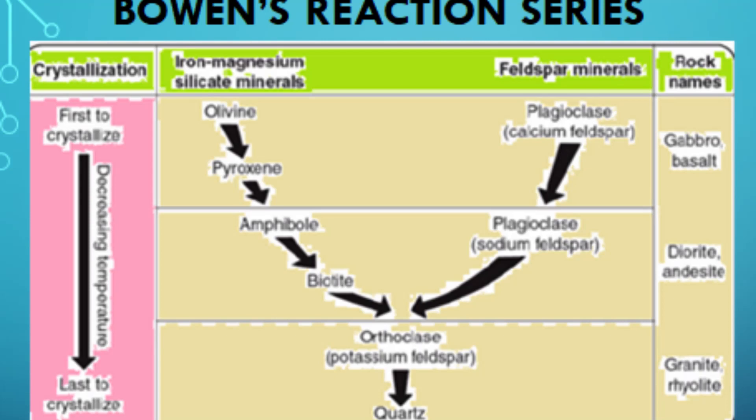The fifth principle is that the cooling rate affects mineral composition. The rate at which magma cools can affect the mineral composition of the resulting igneous rock. If magma cools quickly, only the first minerals to crystallize will have time to form, resulting in a rock rich in olivine and pyroxene. If the magma cools slowly, more minerals will have time to crystallize, resulting in a rock rich in plagioclase feldspar and quartz.